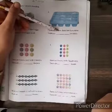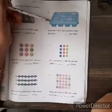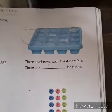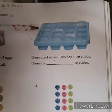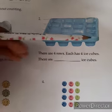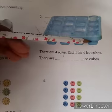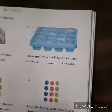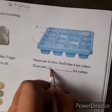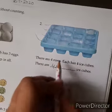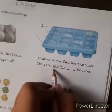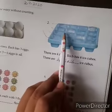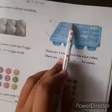See, there are four rows. Count: one, two, three, four. And each row has how many ice cubes? One, two, three, four. So four rows and four ice cubes in each row. How can we write? First we write the number of rows. There are four rows into four ice cubes. Four fours are sixteen. Now let's count to verify: one, two, three... sixteen.